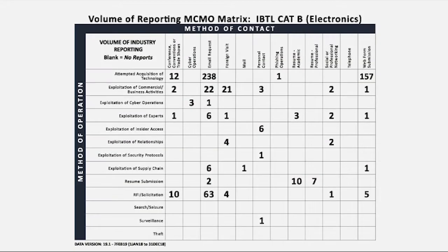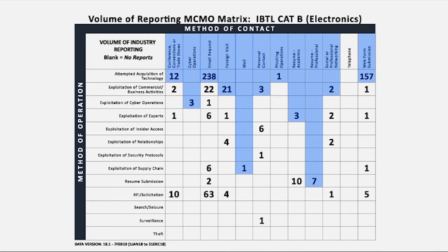The next few slides are examples of matrices prepared by IBTL categories. IBTL category B is electronics, covering sub-areas such as integrated circuits, flexible circuit boards, and field programmable gate arrays. In this example, there were a little over 600 SCRs concerning the targeting of electronics, spanning 11 of the 12 methods of contact, with the bulk occurring through email requests, web form submissions, foreign visits, and conferences, conventions, and trade shows.